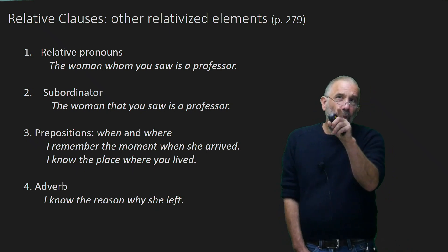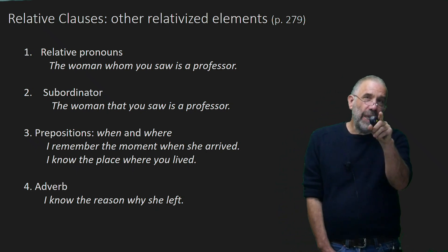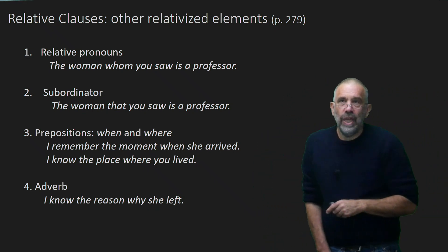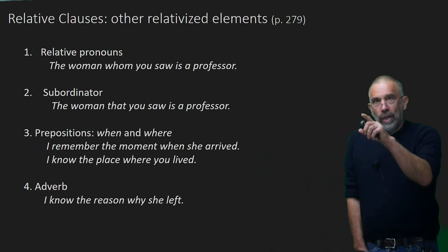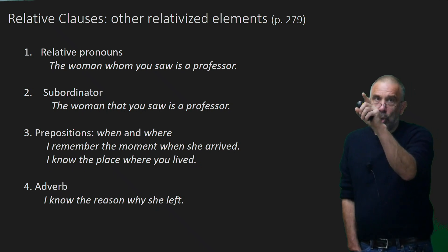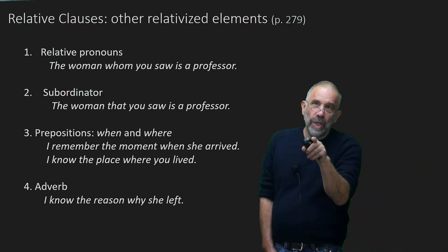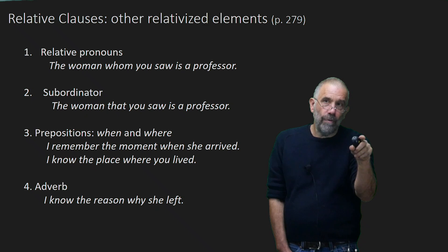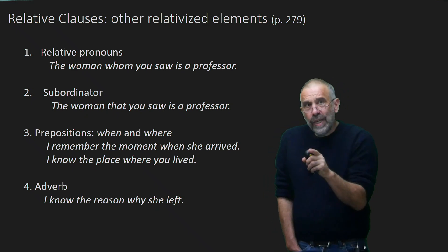And that brings us almost to the end. There are other relativizing elements. And this would be what page 279, I guess, in the textbook, if I'm reading that right. So relative pronouns are what we've been talking about, things like who and which. And then the subordinator that, the woman that you saw as a professor.